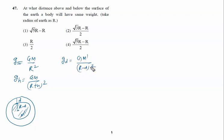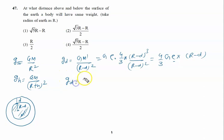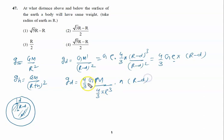M dash is given by density rho times volume, which is 4/3 pi (R minus d) cubed, divided by (R minus d) squared. Solving, it becomes 4/3 G rho pi into (R minus d). Substituting rho as M divided by (4/3 pi R cubed), the 4/3 and pi cancel, giving gravity at depth d as GM upon R cubed into (R minus d).